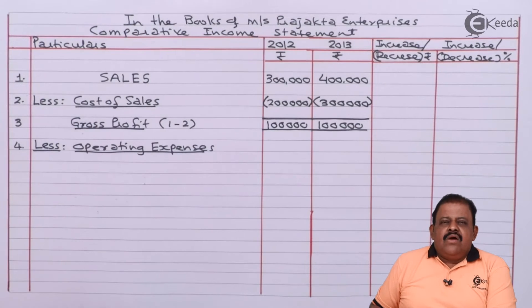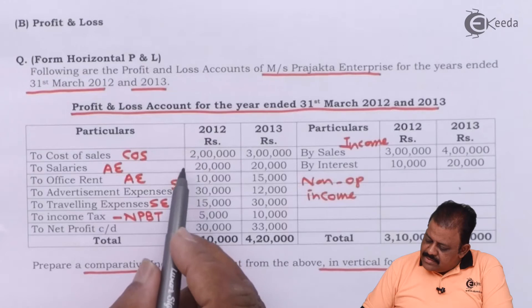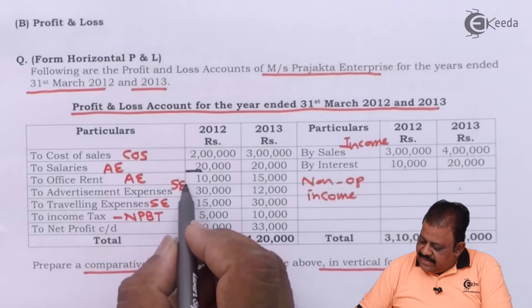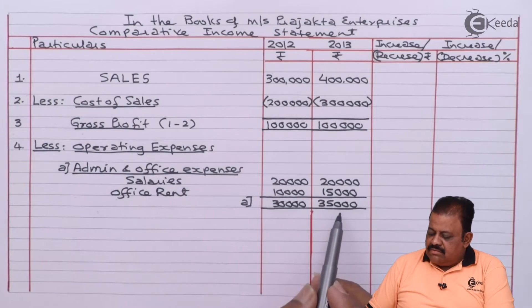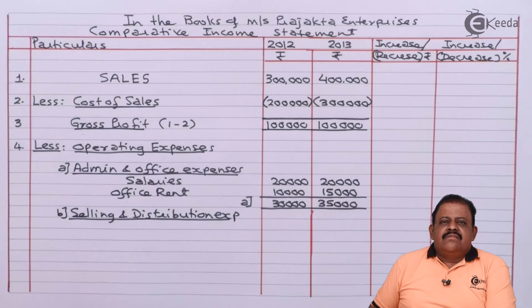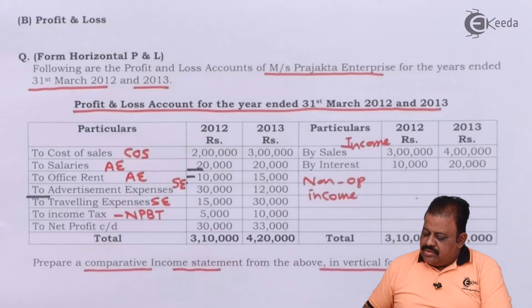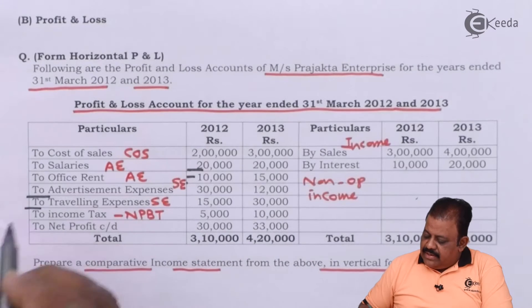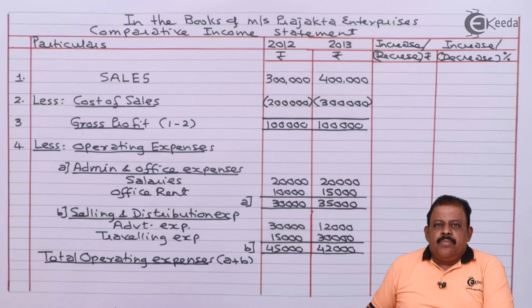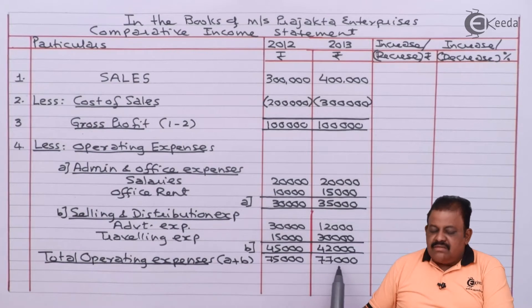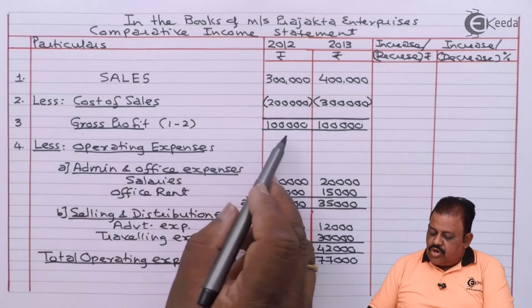For operating expenses: administration and office expenses include salaries and office rent, totalling 30,000 and 35,000. Selling and distribution expenses include advertisement expenses of 30,000 and 12,000, and travelling expenses of 15,000 and 30,000. Total operating expenses are 75,000 and 77,000. This will be deducted from gross profit.